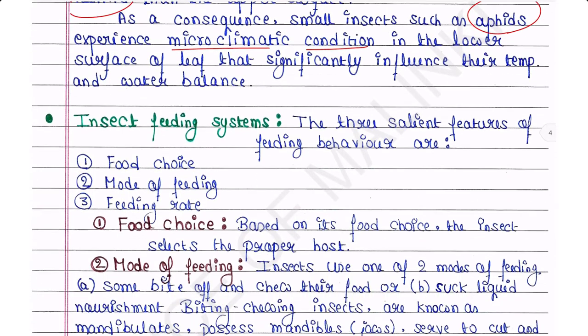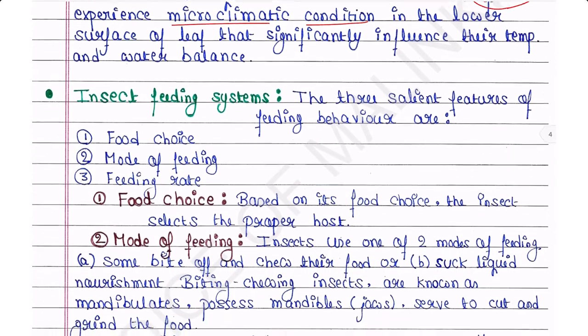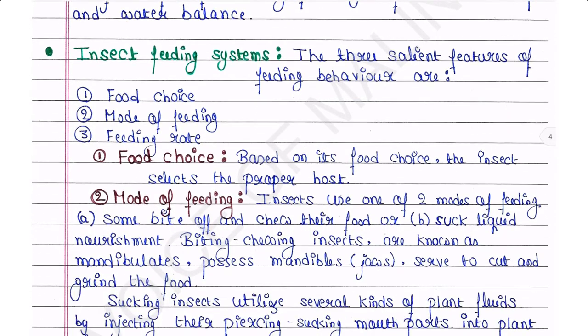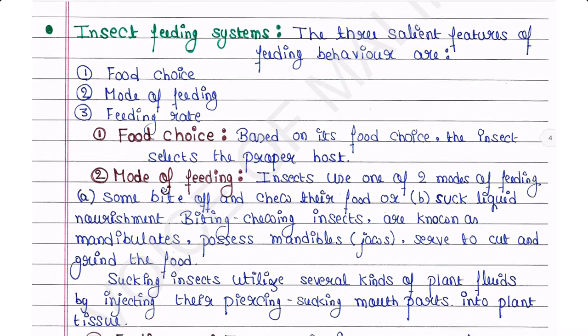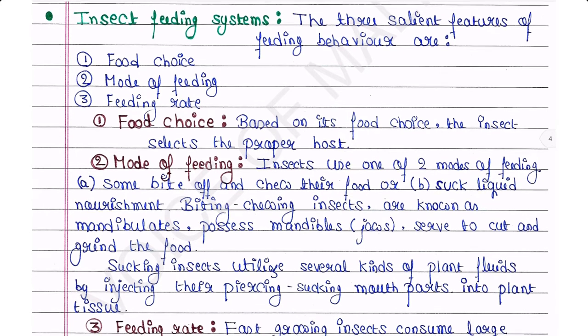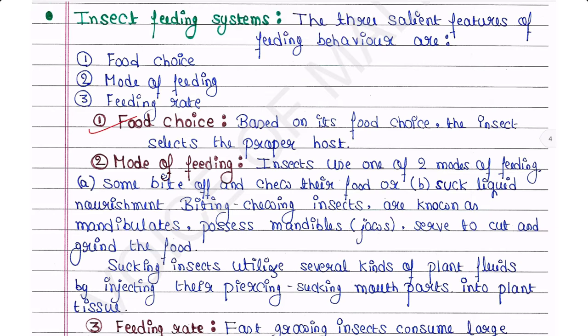Insect feeding systems: the three salient features of feeding behavior are first, food choice; second, mode of feeding; and third, feeding rate.